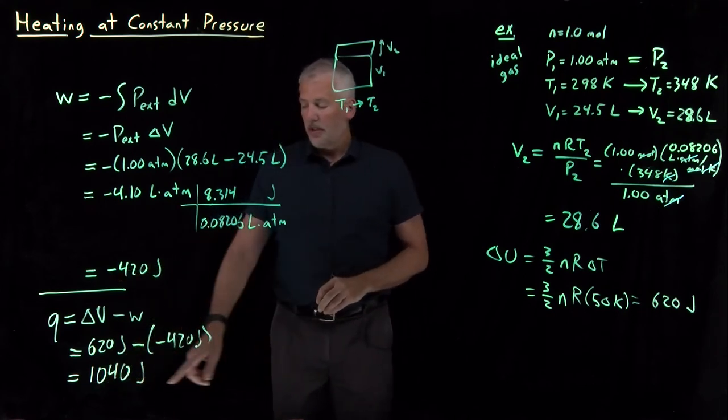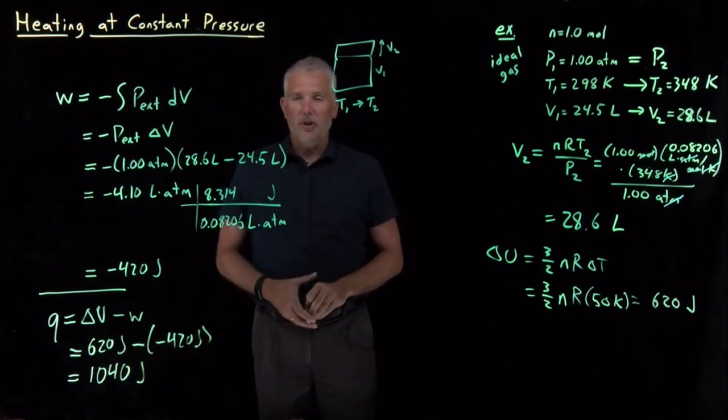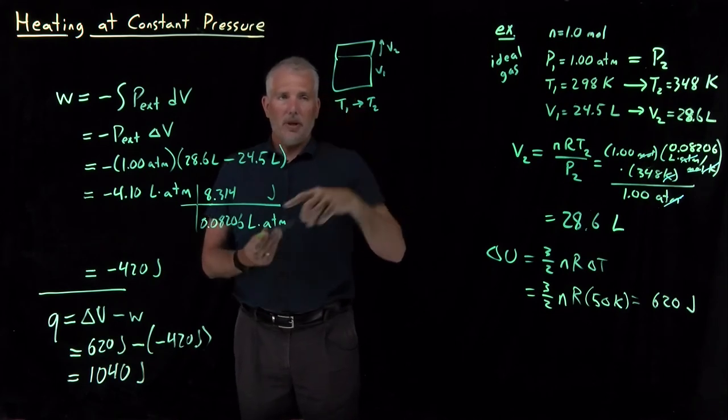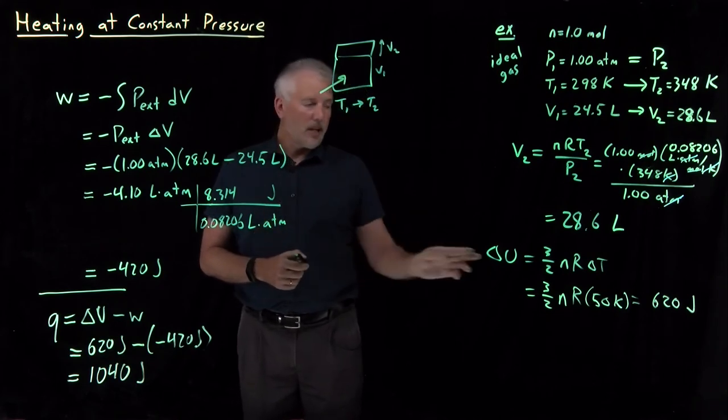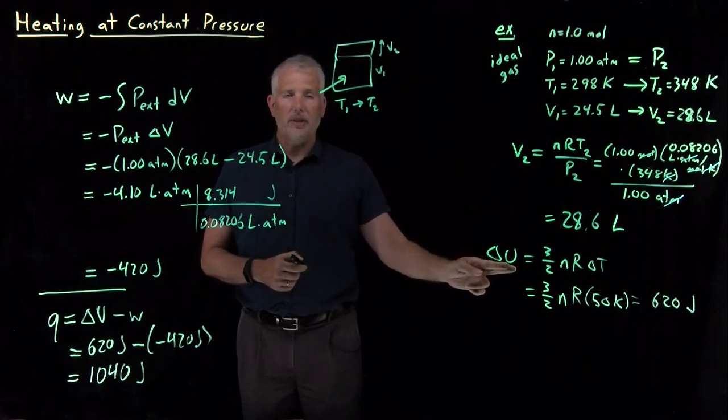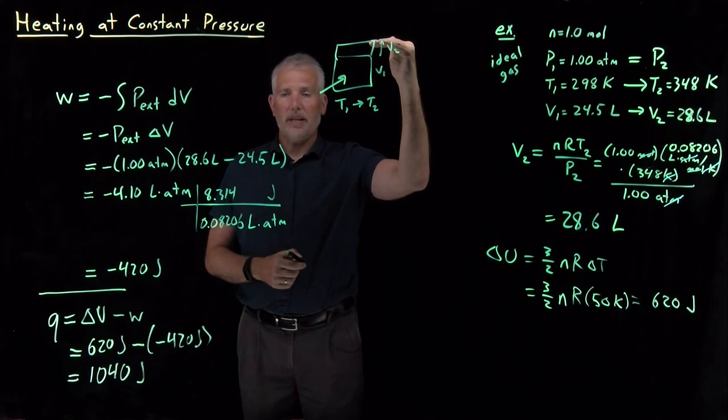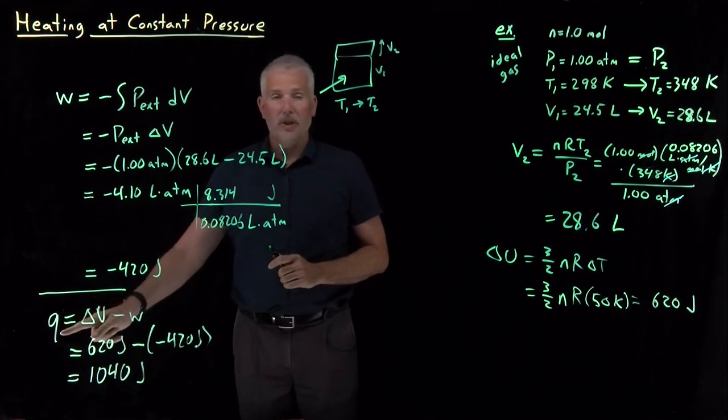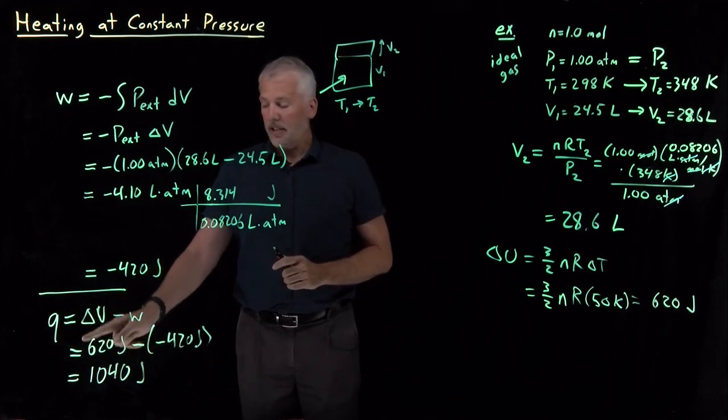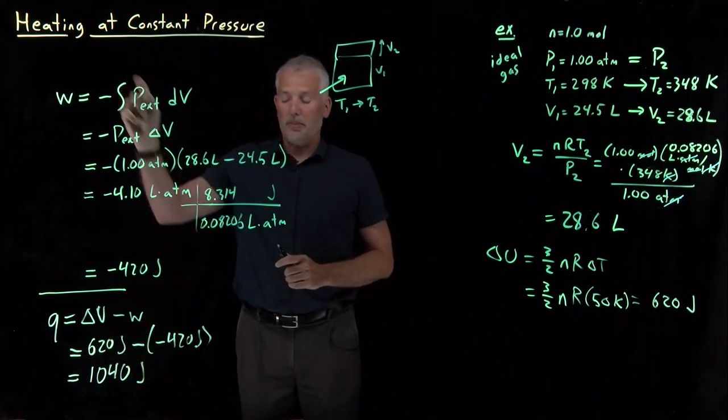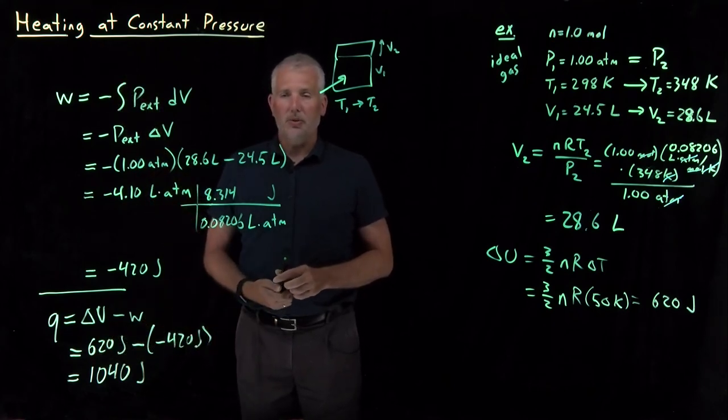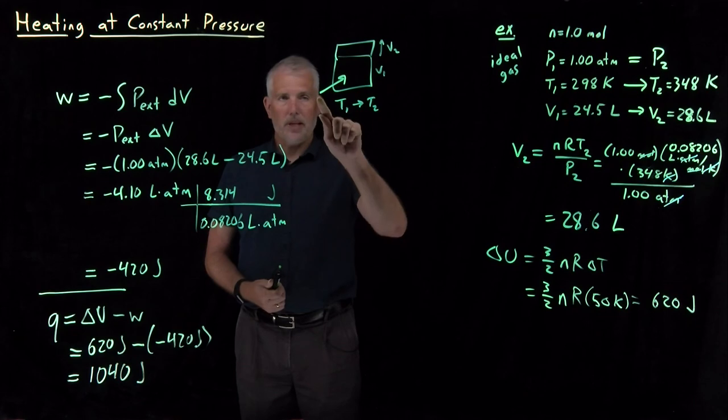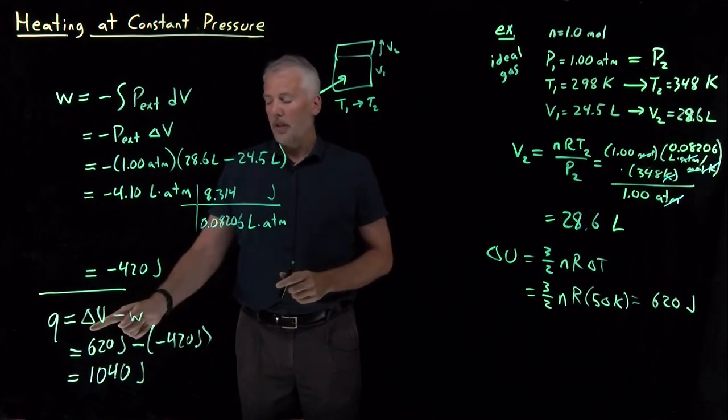The reason Q is this large number, 1,040 joules, is if we think about how much energy had to enter the system, I had to put enough energy into this system not only to heat up the gas to make its kinetic energy increase, but also to pay for the work of pushing back against the atmosphere and expanding the volume of the container. So the total amount of energy I had to put into the gas in the form of heat is the 620 joules it took to raise the temperature, as well as the 420 additional joules it took to expand the container—a total of 1,040 joules worth of energy in the form of heat to pay for energy and work.